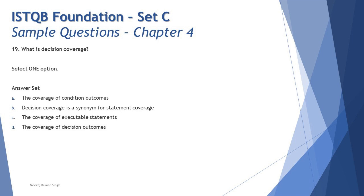Taking it to the options: option A says 'the coverage of condition outcomes.' Conditions are basically if-statement conditions, and that's not what we measure as part of decision coverage. Don't confuse it — statement testing goes with condition coverage. Decision is about decisions made after the condition is fulfilled: if it is true, do this; if it is false, do that. What happens when true and what happens when false are the decision outcomes.